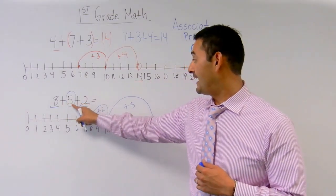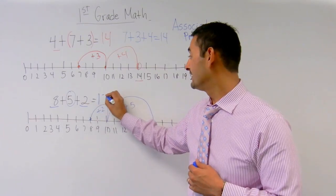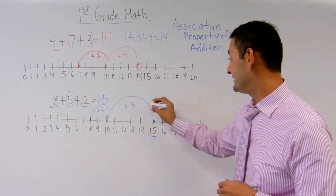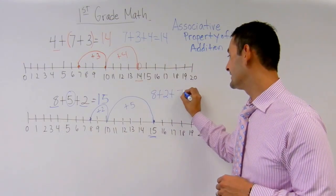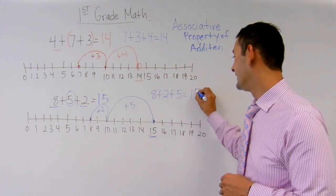So 8 plus 5 plus 2 equals 15. Another way that I can write that is like this. 8 plus 2 plus 5 equals 15.